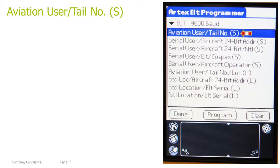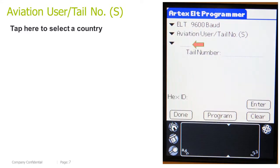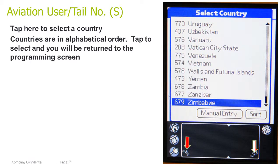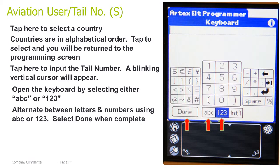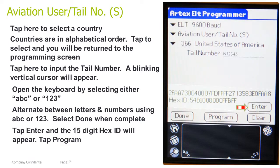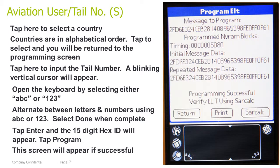Aviation User, Tail Number Short. Tap here to select a country — countries are in alphabetical order. Tap to select and you will be returned to the programming screen. Tap here to input the tail number; a blinking vertical cursor will appear. Open the keyboard by selecting either ABC or 123, and alternate between letters and numbers as needed. Select Done when complete. Tap Enter and the 15-digit HEX ID will appear, then tap Program. This screen will appear if successful.